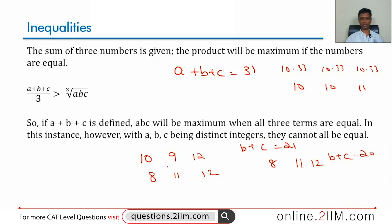Now, 12 out, 10 into 9 is going to be greater than 8 into 11. The numbers are closer to each other. So, between these two, this is higher.